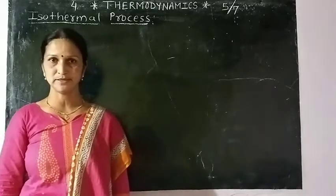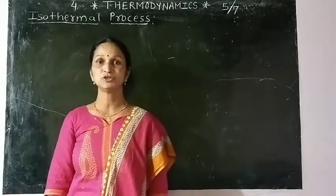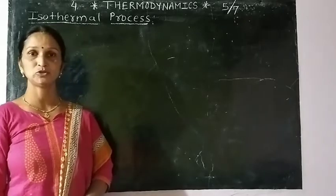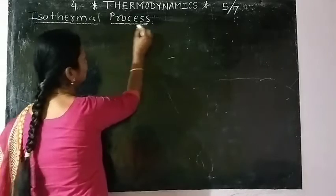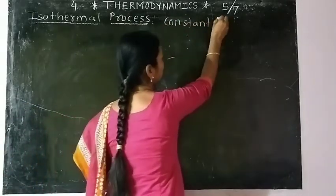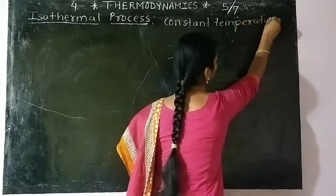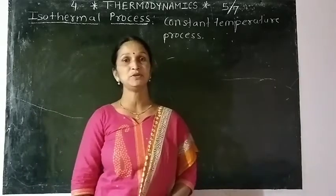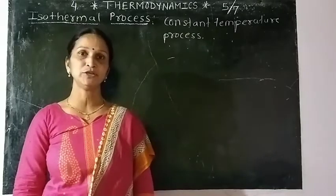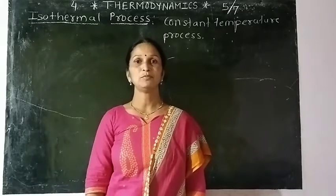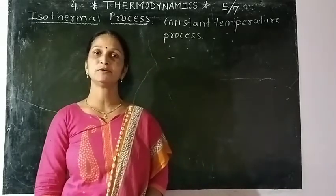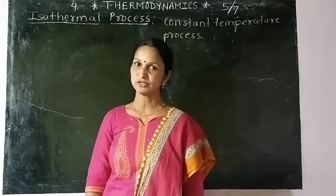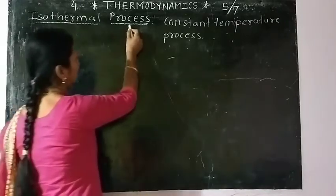If a process takes place where there is change in pressure and change in volume, but the temperature remains constant, it is known as an isothermal process. Isothermal process is a constant temperature process. For the temperature to be constant, the system must be in thermal contact with the surrounding or environment, and must exchange heat with the surroundings so that thermal equilibrium is reached.